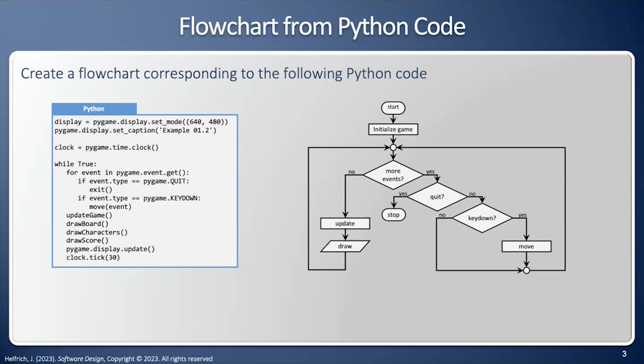When we're finished here, we can see there are three decision points. The first one is to see if we're going to continue looping. The second one is to see if we quit. And the third one is to see if we have a key down event. And there's only one stop condition. That stop condition is if we quit.